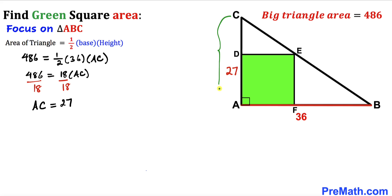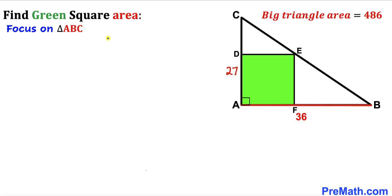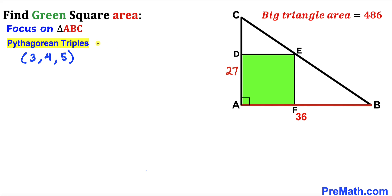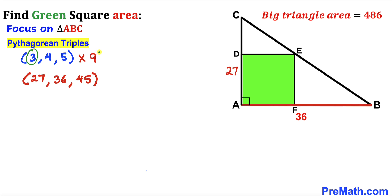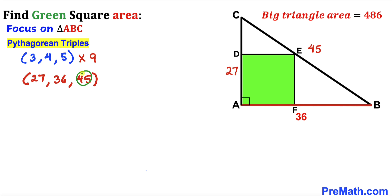Now let's focus again on triangle ABC, whose side lengths are 36 and 27, and we need to find the longest leg BC. Recalling the Pythagorean triplet 3, 4, and 5, we multiply all numbers by 9: 3×9 = 27, 4×9 = 36, and 5×9 = 45. So the hypotenuse BC turns out to be 45 units.